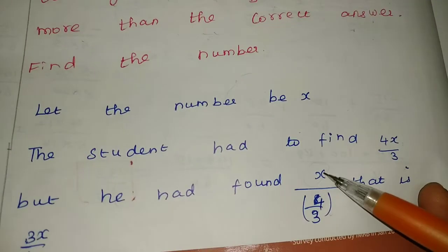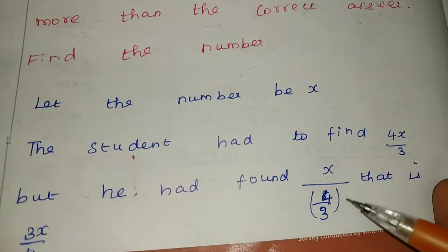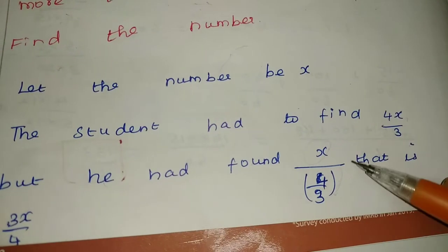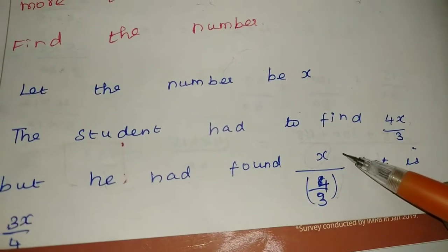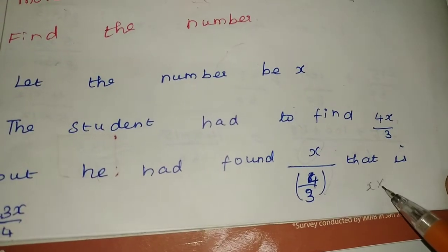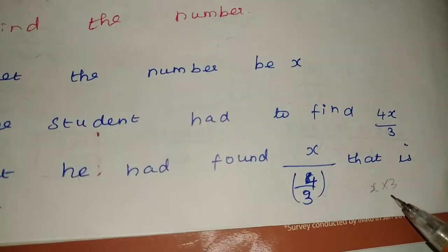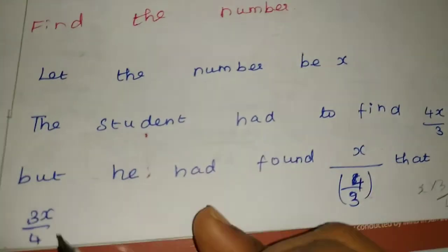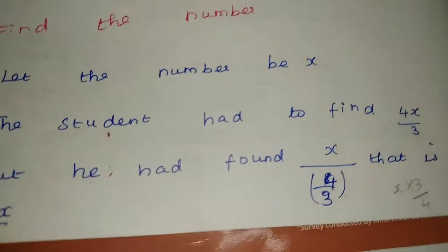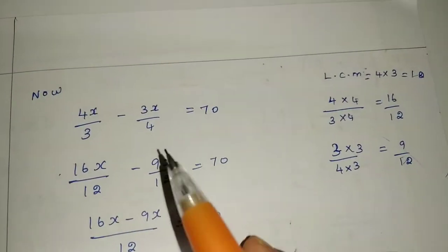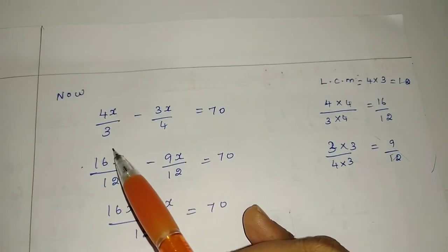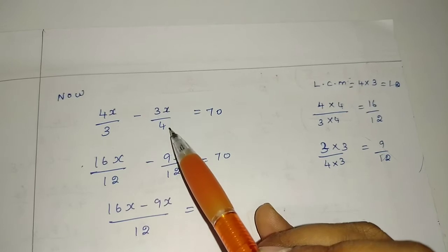For the division part, x divided by 4/3 — we want to change this using the reciprocal. So x multiplied by 3/4 gives us 3x/4. The multiplied number is 4x/3 and the divided number is 3x/4.